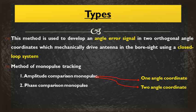Out of these two methods, amplitude comparison monopulse tracking is the best one. This amplitude comparison monopulse tracking method is further divided into two types: the one-angle coordinate system and the two-angle coordinate system. In the one-angle coordinate method we measure only one angle, while in the two-angle coordinate method we find the error signal by measuring two angles of the target — the elevation angle as well as the azimuth angle.